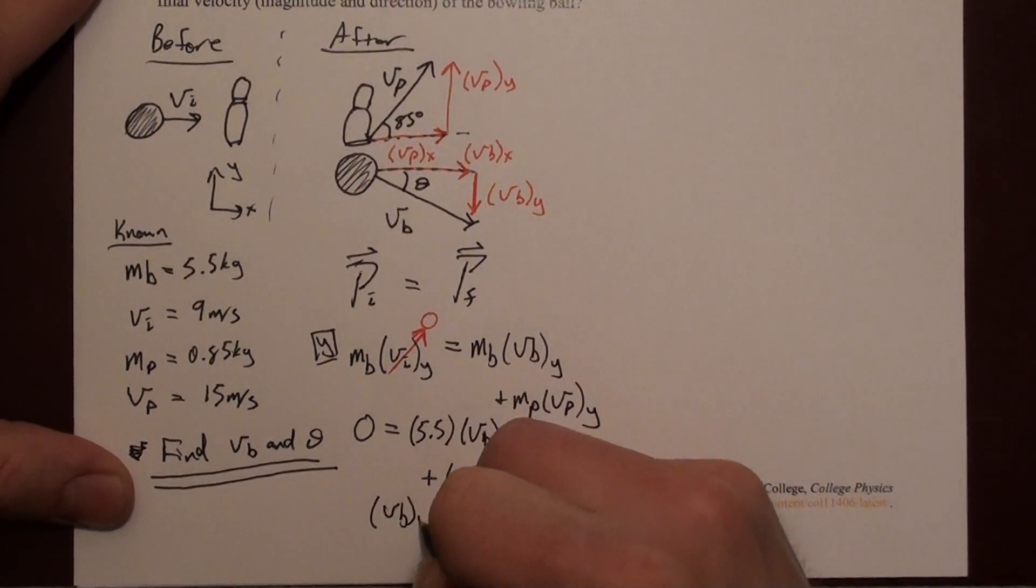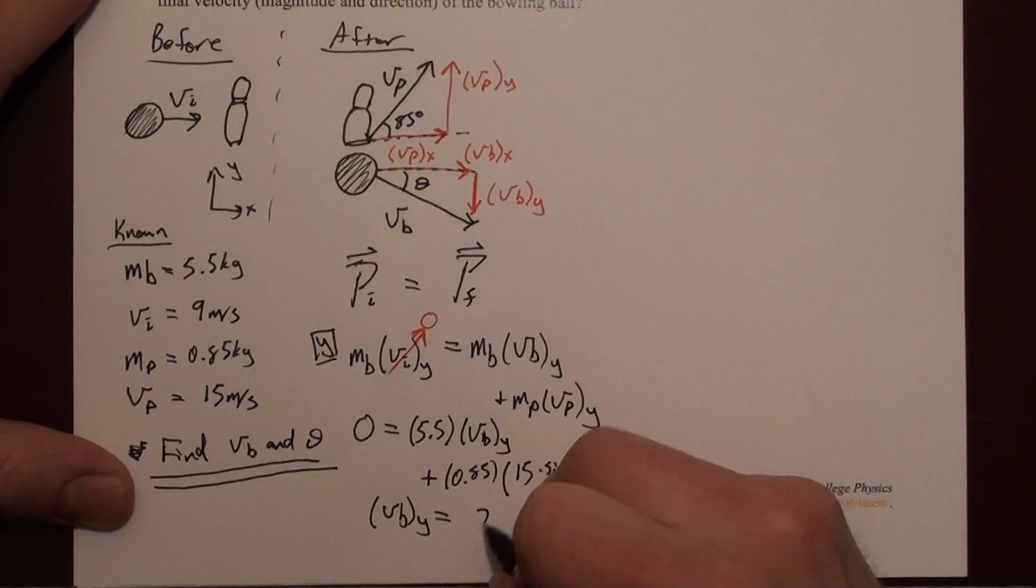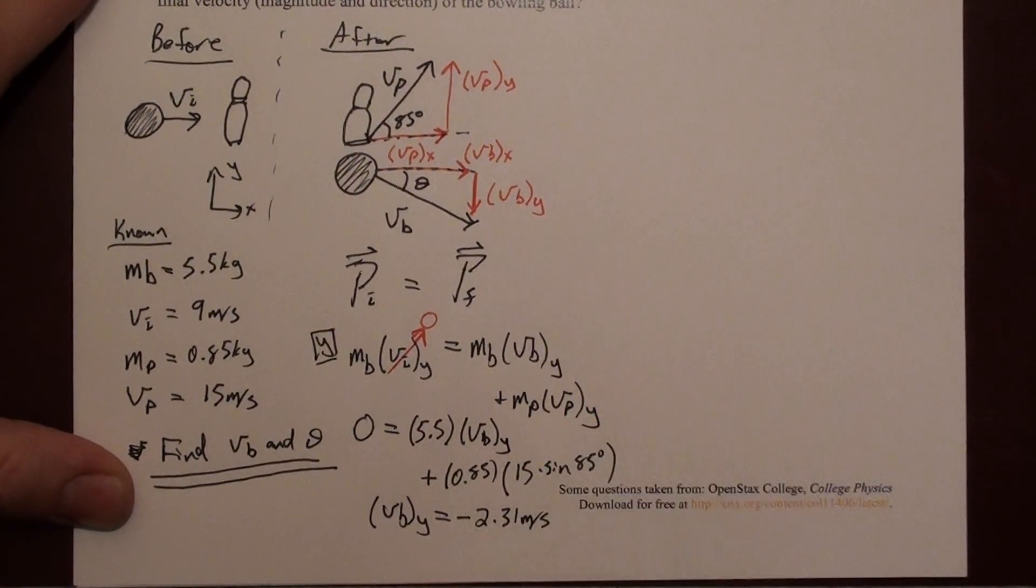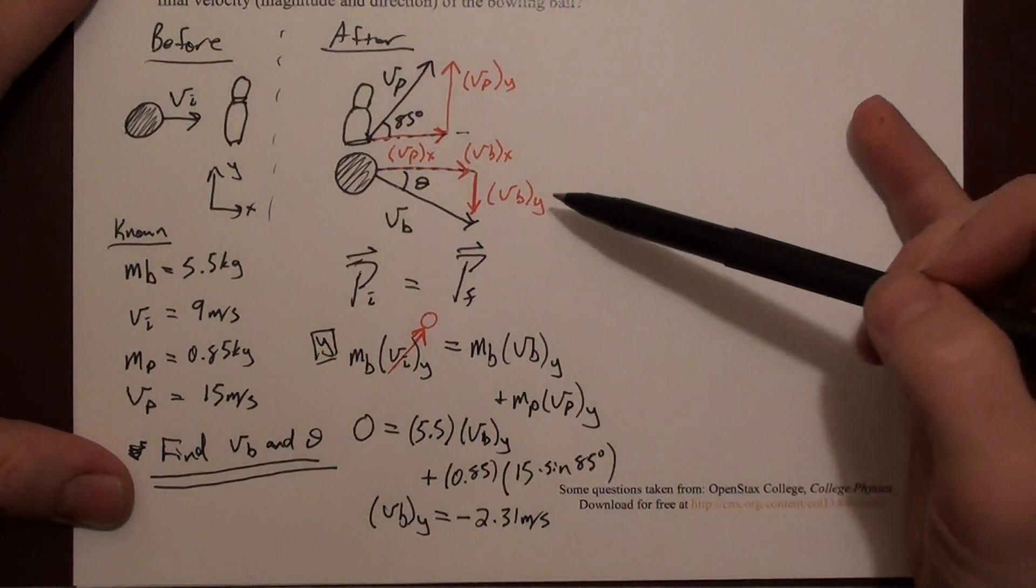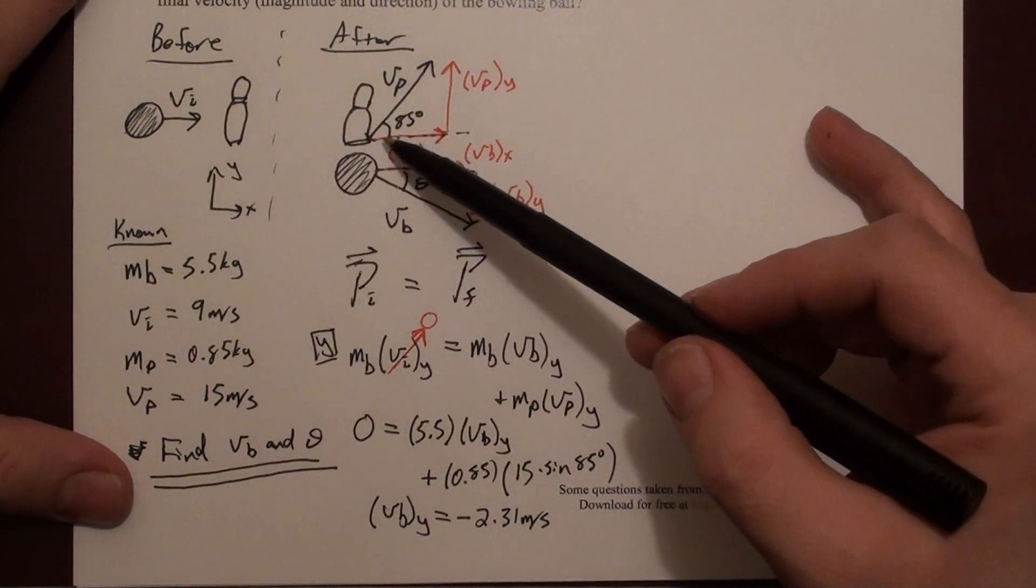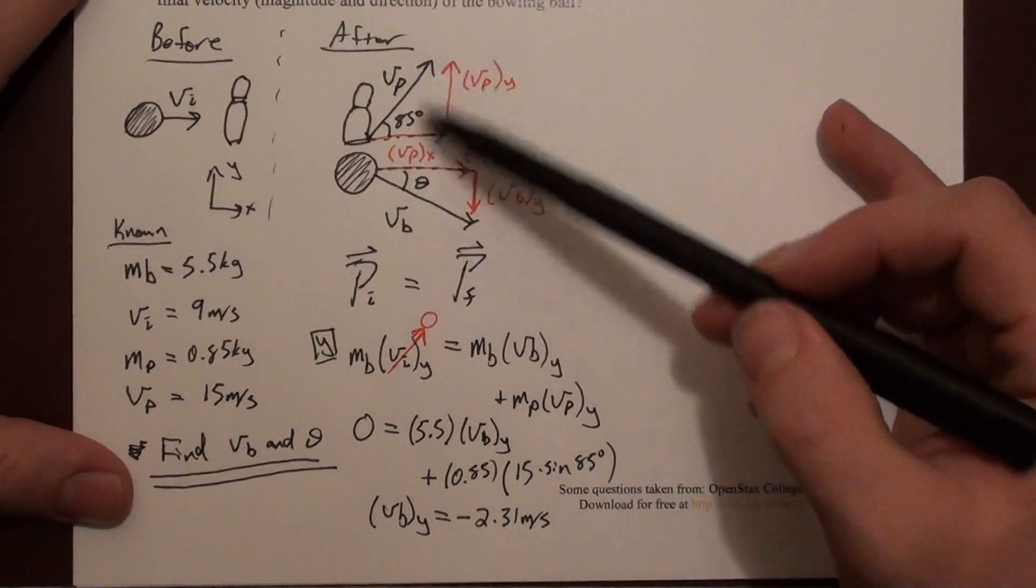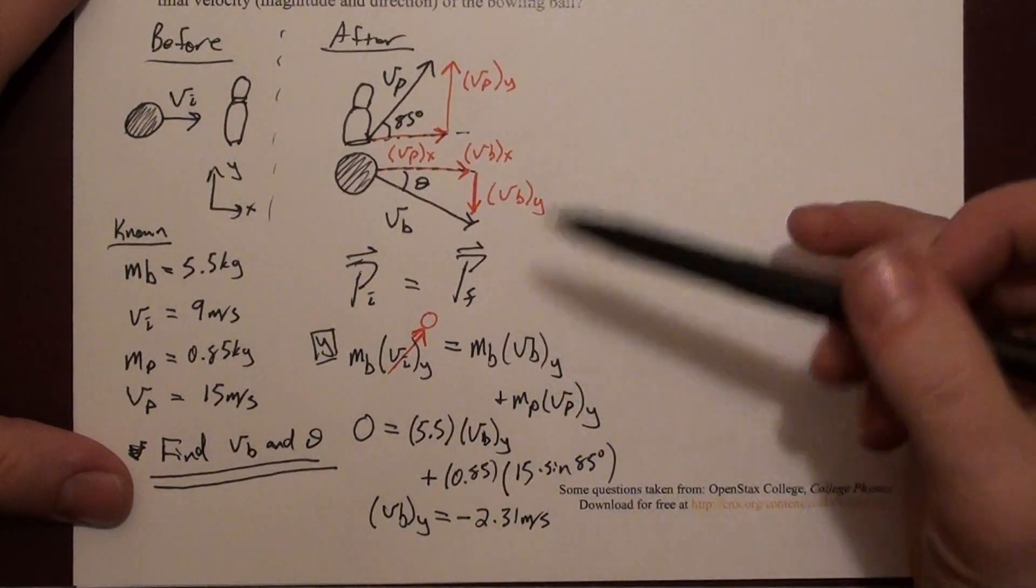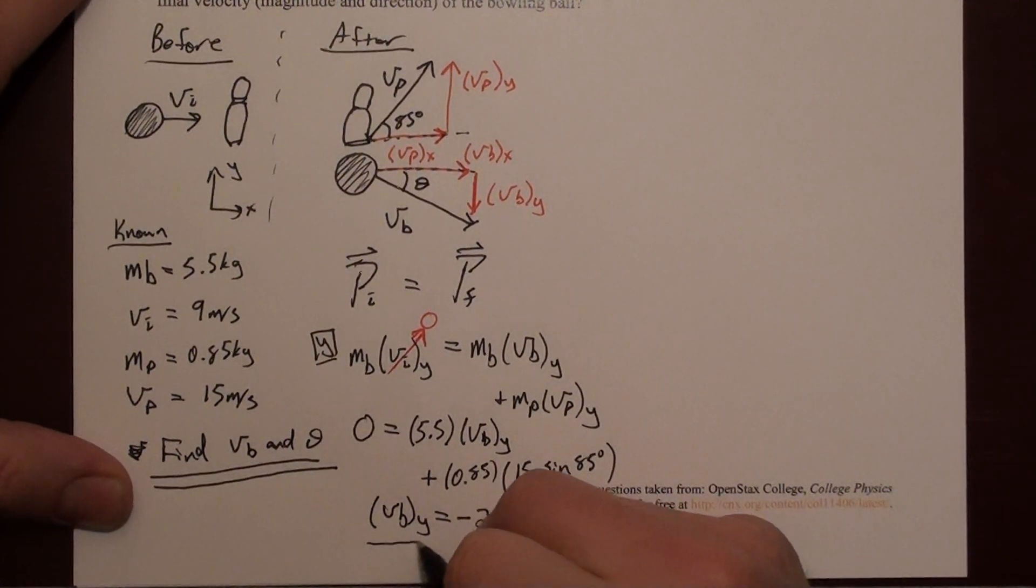If you solve this equation for vb y, I'm going to slide this up a little bit, you get that vb y is negative 2.31 meters per second. That's indicative of the fact that this thing is moving downward, which makes sense in our picture. If the pin flies off in the upward direction, the ball must be flying in the negative direction. So this is part of our answer.